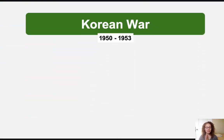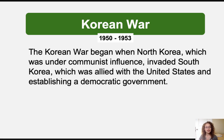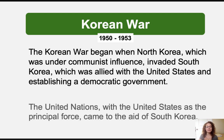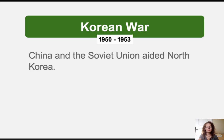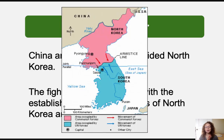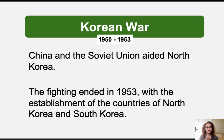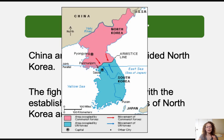The Korean War took place from 1950 to 1953. It began when North Korea, which was under communist influence, invaded South Korea, which was allied with the United States and establishing a democratic government. The United Nations, with the United States as the principal force, came to the aid of South Korea. China and the Soviet Union aided North Korea. The fighting ended in 1953 with the establishment of the countries of North Korea and South Korea.